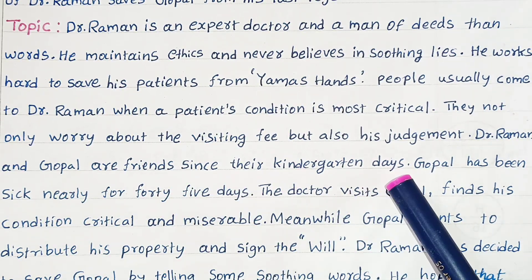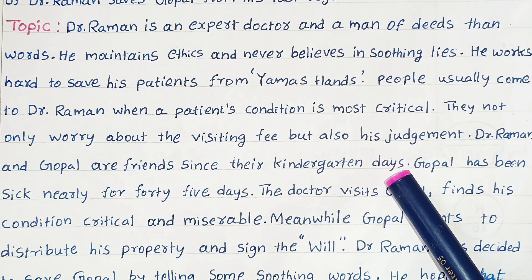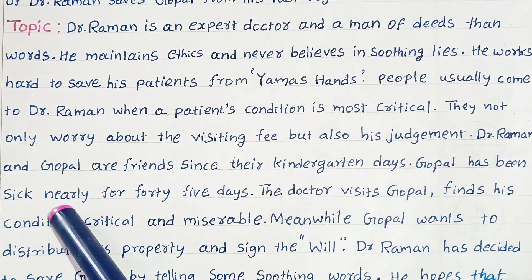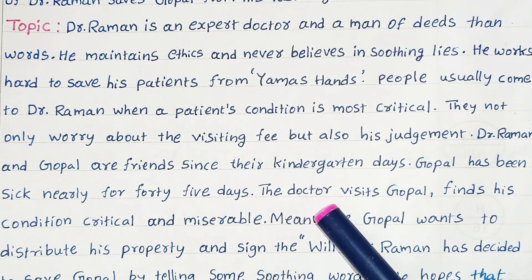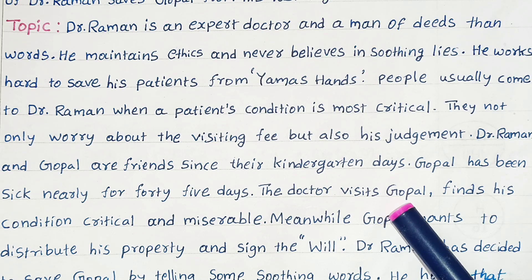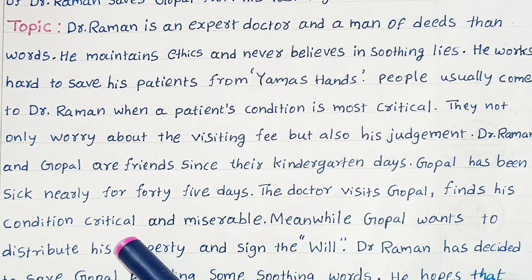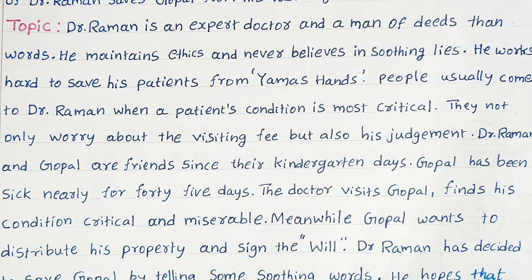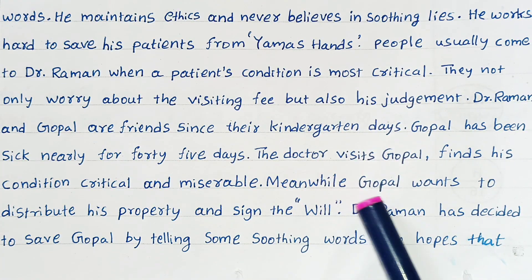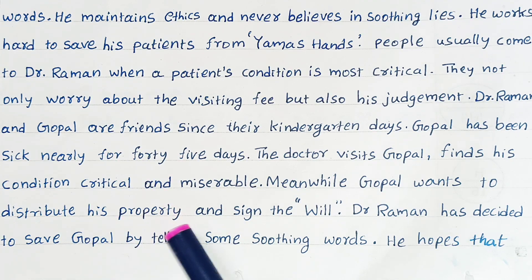Dr. Raman and Gopal are friends since their kindergarten days. Gopal has been sick for 45 days and his condition is critical. In this situation, Gopal wants to distribute his property and sign his will.